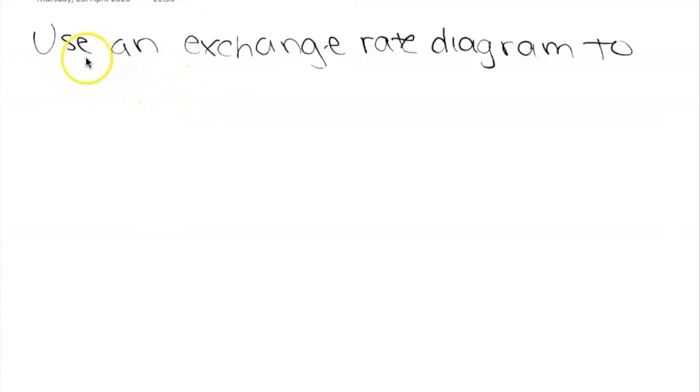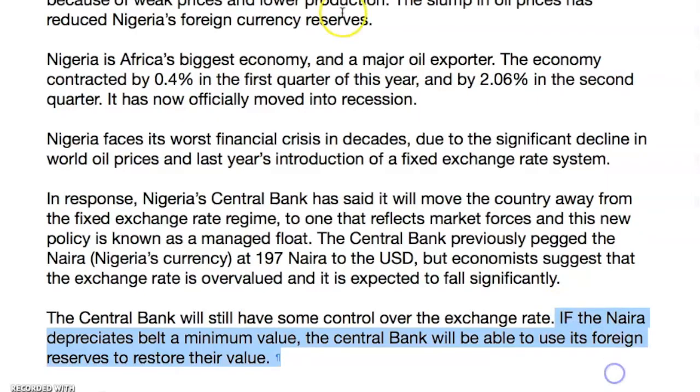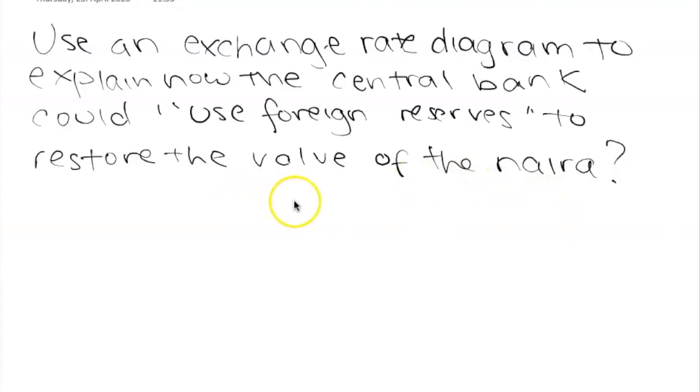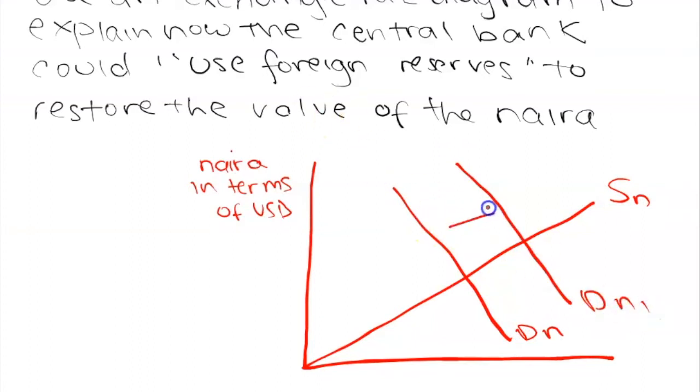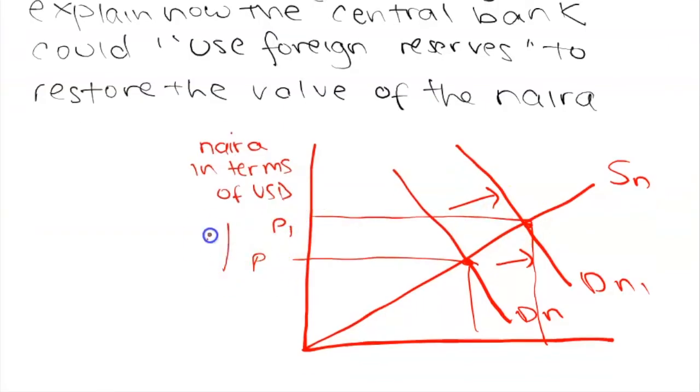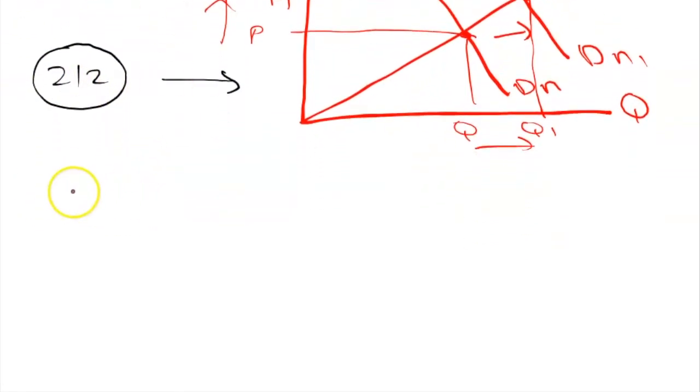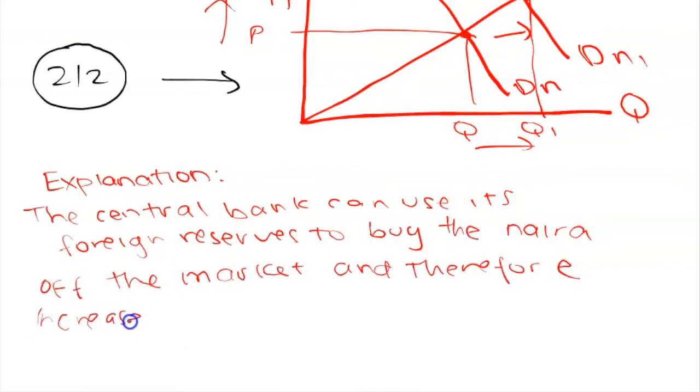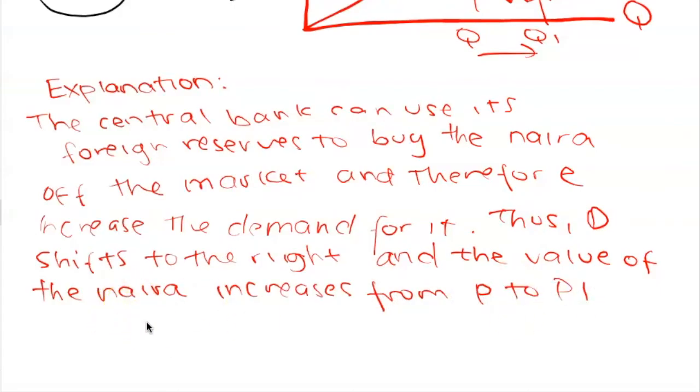On to our first four-mark question. This one tells us, using an exchange rate diagram explain how the central bank could use its foreign reserves to restore the value of the Nigerian naira. This is where you need to have a strong understanding of exchange rate economic theory. You might remember from your study that the central bank can use its foreign reserves to buy its own currency off the market and therefore increase the demand for the currency. All you need to draw is an exchange rate diagram that shows the increase in demand and therefore an increase in value of the currency. I also like to label the diagram as diagram A or diagram B so that during my eight-mark essay question, I can reference this diagram and not have to draw it again, and this saves time. As long as your axes and everything are labeled correctly, you should get two marks out of two for the diagram. For the explanation, to get two out of two marks, you just have to clearly explain that the central bank will use its foreign reserves to buy the Naira off the market. This will increase the demand for it, and then the demand shifts to the right and the price of the Naira increases again to before the devaluation or depreciation.